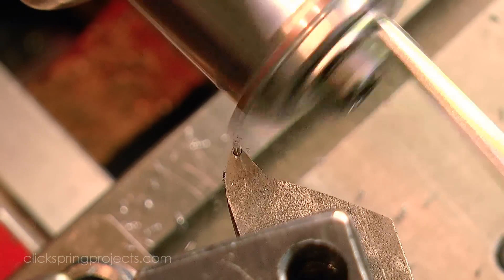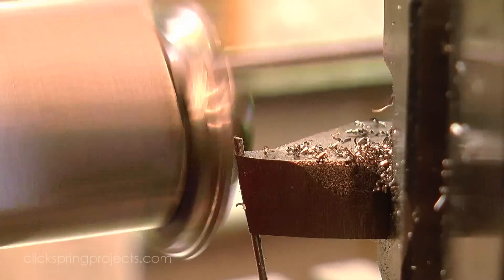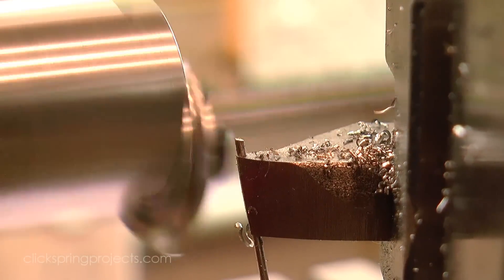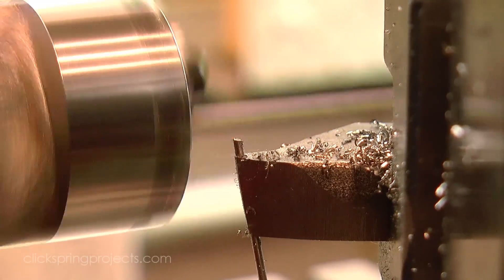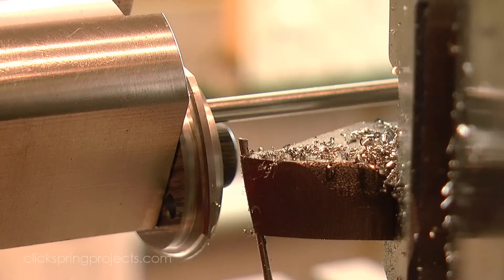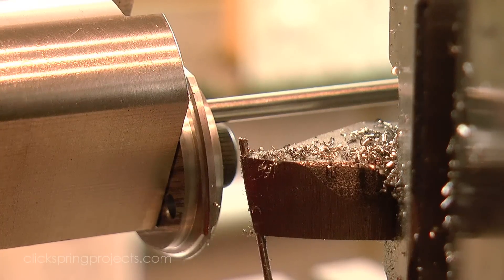Aside from the need for extra care in ensuring accurate movement of the handwheels, the procedure is now performed as you've come to expect, with each side of each lobe profiled one at a time, and then the blank flipped to complete the same cuts on the other side.